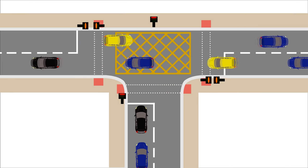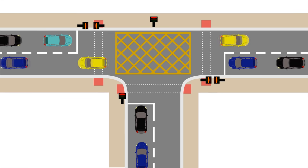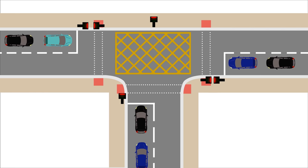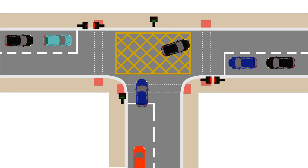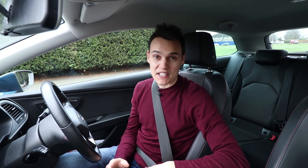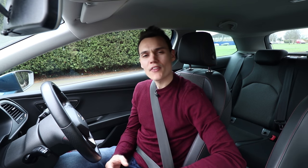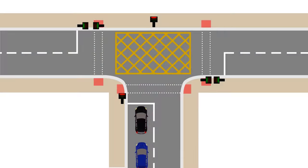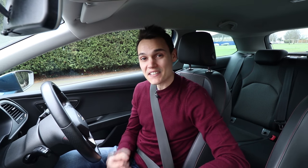There are basically two solutions to this problem. Firstly, you could have traffic lights. This is a great idea because the adjoining queue of traffic actually gets a chance to move when the lights change. But the trouble with traffic lights is, although they work really well when the roads are really busy, when the roads are quiet, you can find yourself waiting at a red light when nobody's there. That's a complete waste of time.